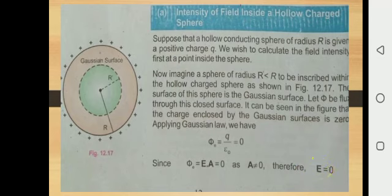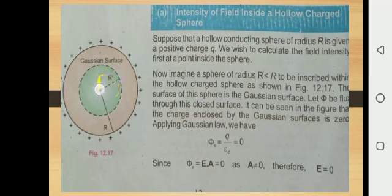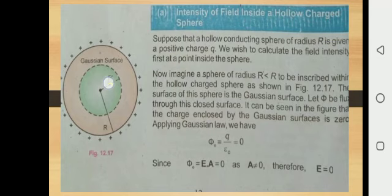Keep in mind: the interior of a hollow charged metal sphere is a field-free region. For example, any apparatus placed within a metal enclosure is shielded from the external electric field.